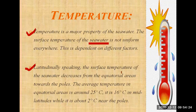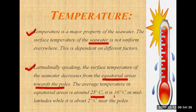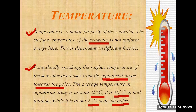The surface temperature of seawater decreases from the equatorial areas towards the poles. The average temperature in equatorial areas is around 25 degrees Celsius. It is 16 degrees Celsius in mid-latitudes, while it is about 2 degrees Celsius near the poles. This point tells us about the different heat zones, which we studied in previous classes — torrid zone, Tropic of Cancer, Tropic of Capricorn.